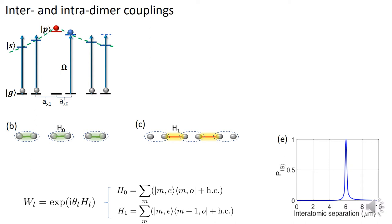Starting with a localized P excitation, the first laser pulse with its specific detuning delocalizes the walker over two sites of a dimer. The laser detuning is then changed so that these two sites interact with lattice sites on the other sublattice, further delocalizing the walker. Repeating this sequence implements the coinless discrete-time quantum walk. A simulation shows maximum population of the auxiliary S Rydberg level as a function of distance from the quantum walker, with excitation narrowly confined around a 6-micrometer lattice constant.